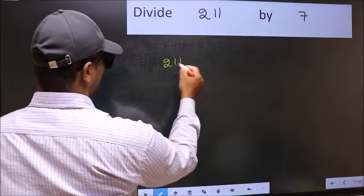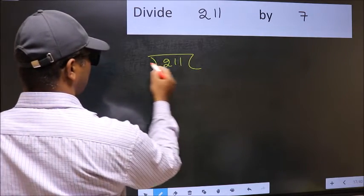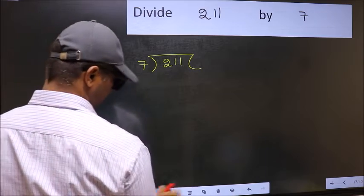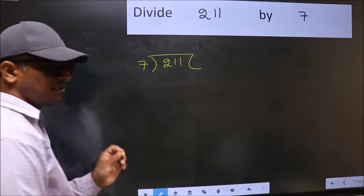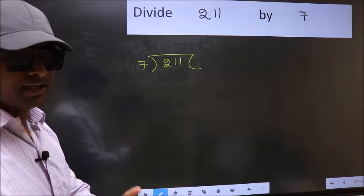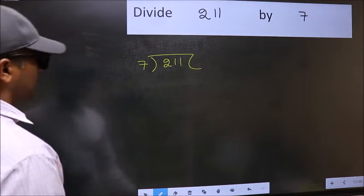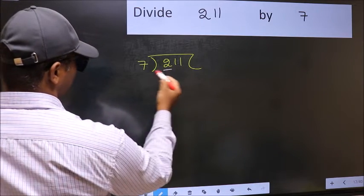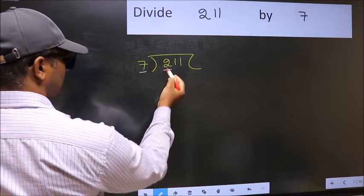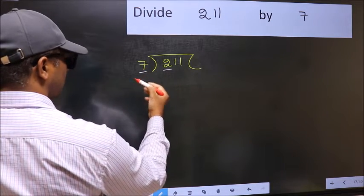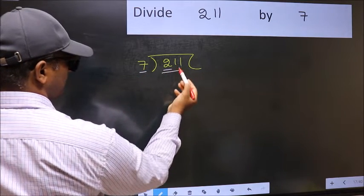211 and 7 here. This is your step 1. Next, here we have 2 and here 7. 2 is smaller than 7, so take 2 numbers, 21.